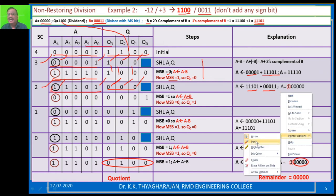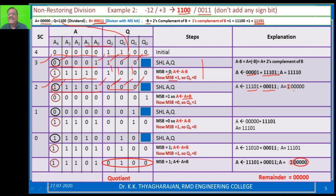Here you have 6 bits, but A can hold only 5 bits. So you take the least 5 bits and put it in A. Now what about Q? Q bits come as they are, this 0 comes here. The rightmost blank position: check the MSB. MSB is 0, so Q0 is equal to 1. Now this step is also over.